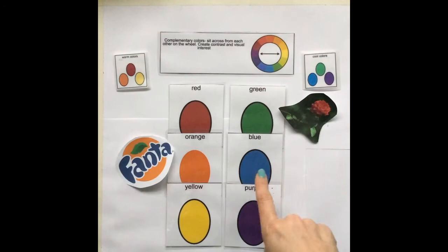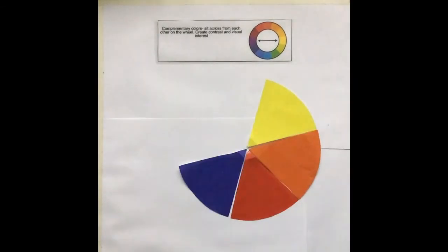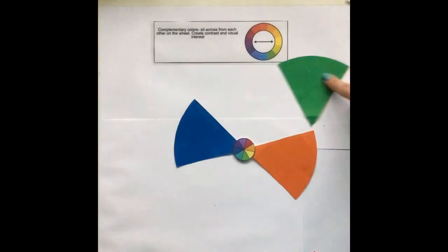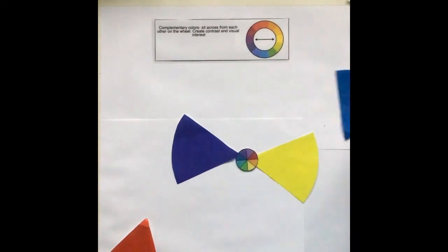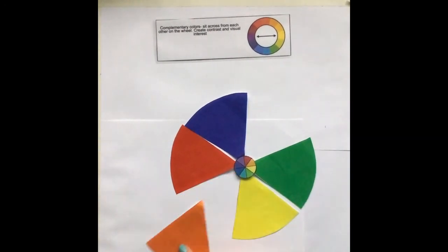Using the color wheel try to create a bow tie. This will help you find your complementary colors. By taking away all the colors except for the two right across from each other you have successfully made a bow tie.